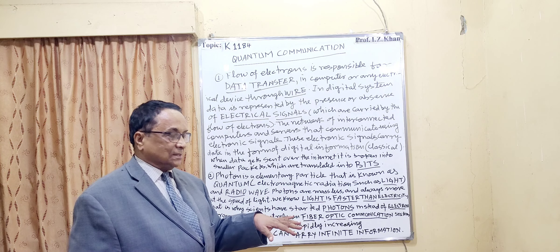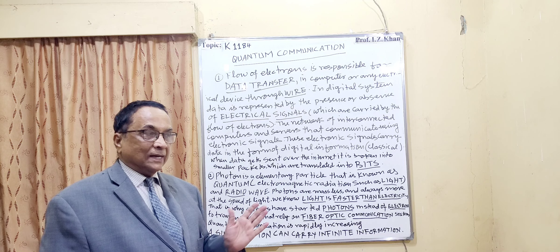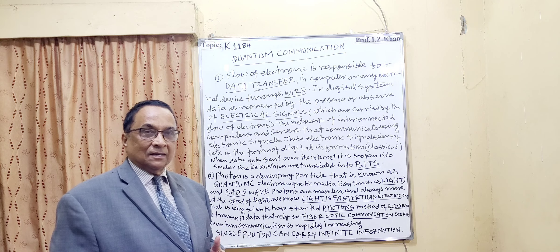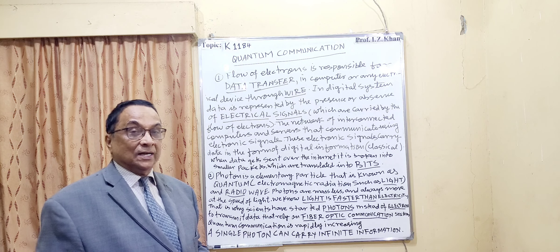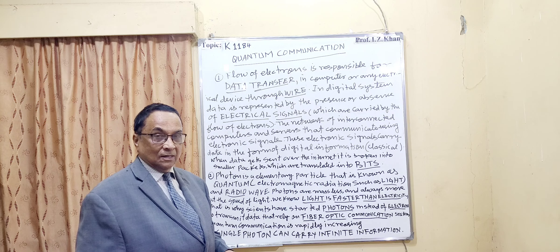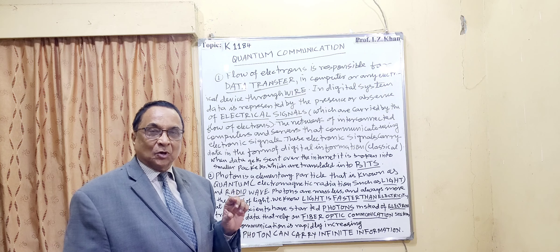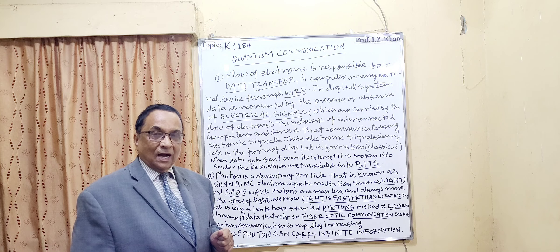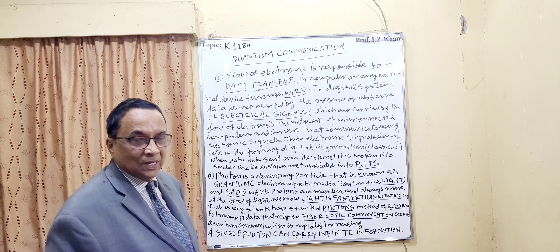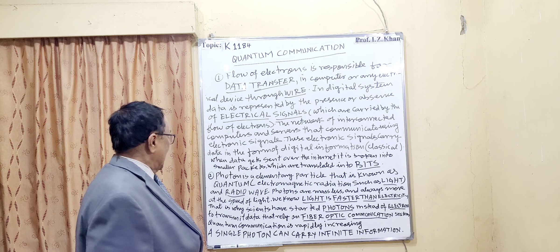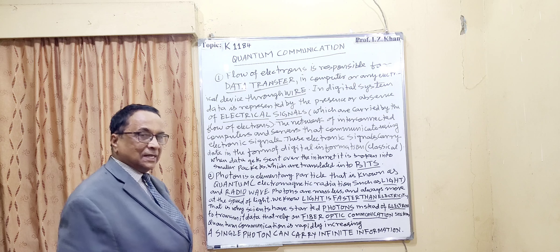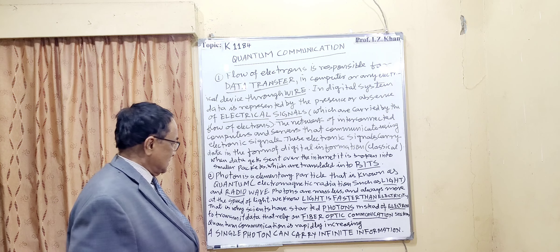Quantum information age is coming. Our current internet will still have its specific work, but quantum communication will be used where there are security problems or where very fast speed is needed — especially in the military where your data should not be stolen, hacked, or manipulated. In that case, quantum information will be very effective. It will be encrypted — cryptography will be there. Crypto means key and lock. Only the key can decode the coding of crypto. That is quantum information. Photons instead of electrons, and to transmit data, they rely on fiber optic communication systems. Quantum communication is rapidly increasing day by day.